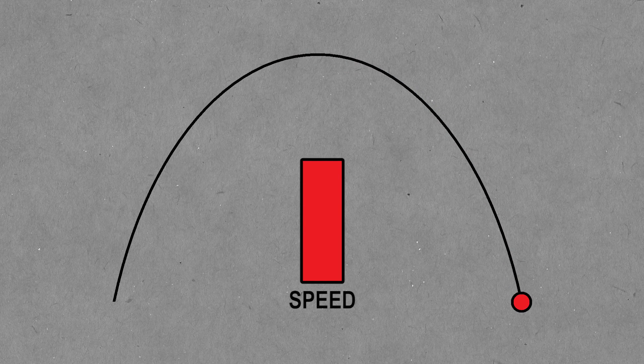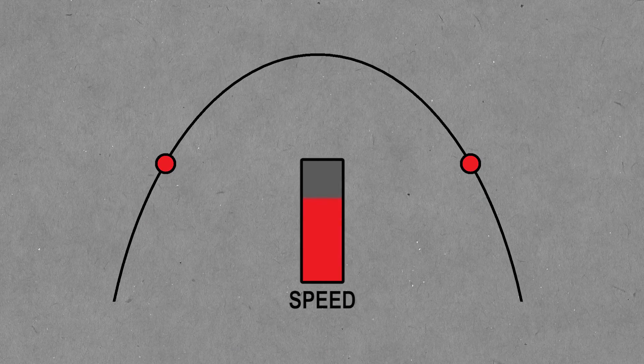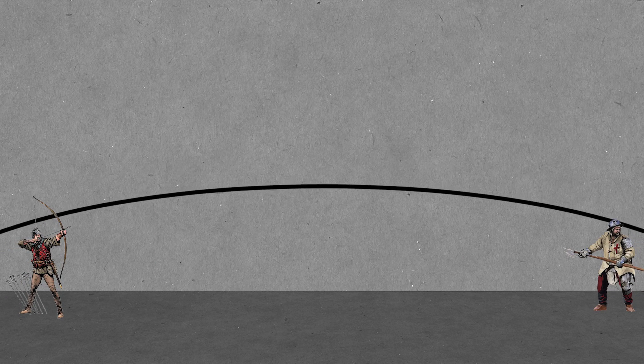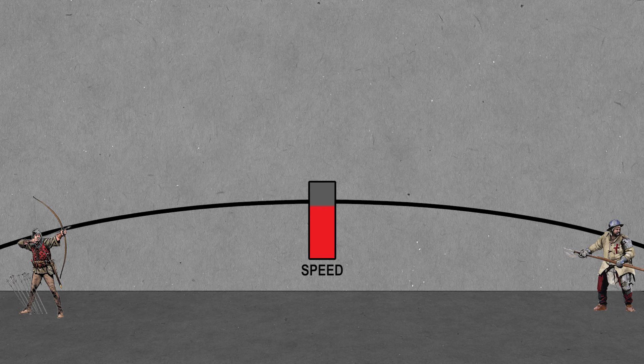So as long as there's no forces like air resistance, it's just gravity, two points at the same elevation will always have the same speed. This means that because your opponent is at the same elevation as you, he will always be hit by an arrow moving as fast as it was fired.